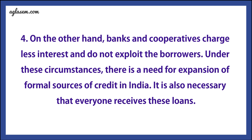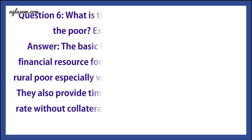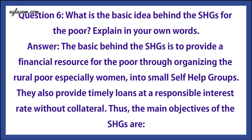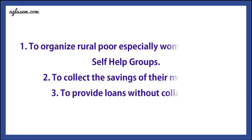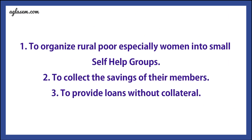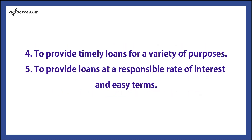Question 6: What is the basic idea behind the Self-Help Groups (SHGs) for the poor? Answer: The basic idea behind SHGs is to provide a financial resource for the poor by organizing rural poor, especially women, into small self-help groups. They also provide timely loans at a reasonable interest rate without collateral. The main objectives of SHGs are: first, to organize rural poor especially women into small self-help groups; second, to collect the savings of their members; third, to provide loans without collateral; fourth, to provide timely loans for a variety of purposes; fifth, to provide loans at a responsible rate of interest and easy terms.